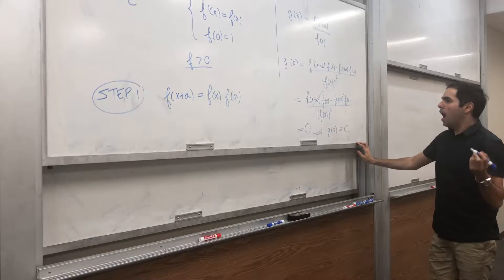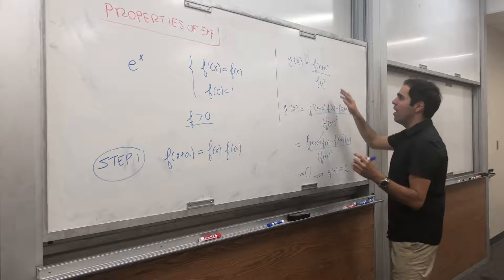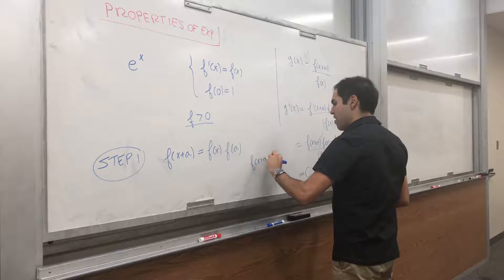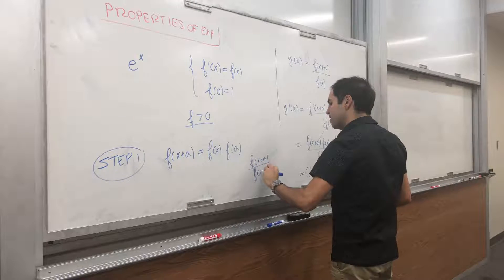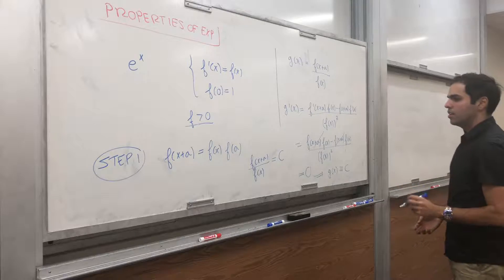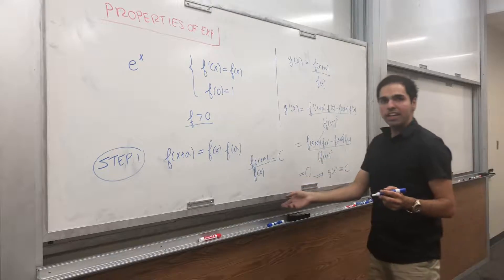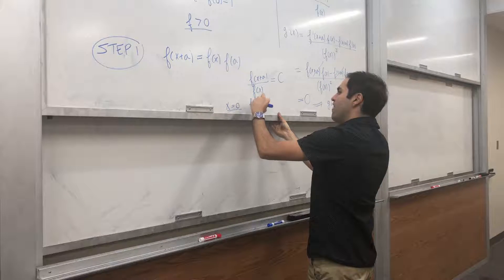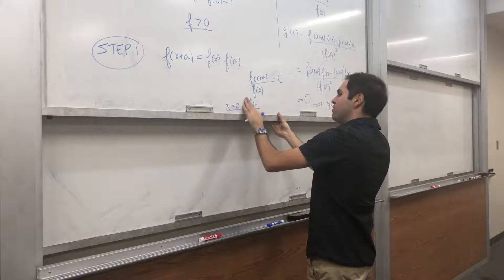Now, how do we determine this constant? Well, we get f of x plus a over f of x equals to the constant. In particular, just plug in x equals to zero to get f of a over f of zero.